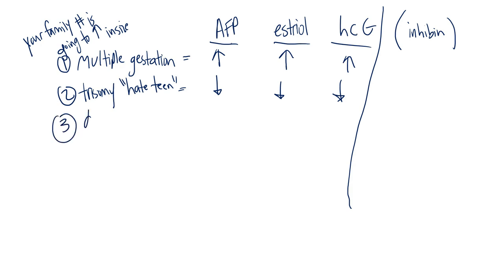Now for Down syndrome. This one's high yield and asked frequently because the chance of your child having Down syndrome is far higher than trisomy 18 or Patau syndrome. With Down syndrome, the AFP is down.